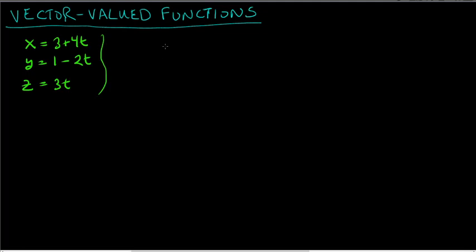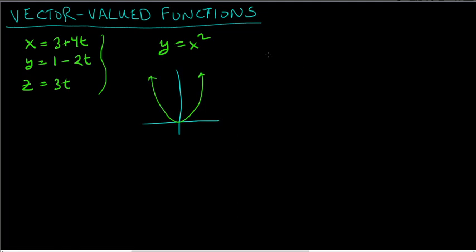But they don't have to be lines. For example, if you have the ordinary parabola y = x², we can represent this parametrically by just saying x = t and y = t², since y is x squared. So this is the same parabola, just represented parametrically.